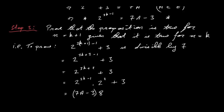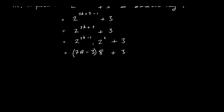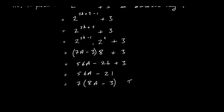We have 2 to the power of 3, which is 8, so the expression becomes (7a minus 3) times 8 plus 3. Multiplying out: 56a minus 24 plus 3 gives 56a minus 21. Factorising out 7 gives 7(8a minus 3), so this is divisible by 7. Therefore the proposition is true for n equals k plus 1.